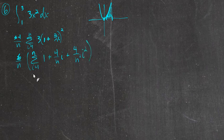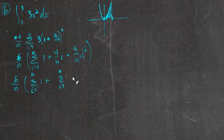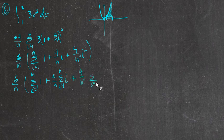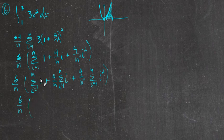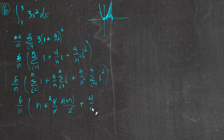Each of these gets broken out into its own sum. We have 6/n times the sum from i=1 to n of 1, plus the sum of 4/n · i (pulling out 4/n as a constant, leaving i), plus 4/n² times the sum of i². The formula for sum of 1's is n; the formula for sum of i is n(n+1)/2, multiplied by 4/n; and the formula for sum of i² is n(n+1)(2n+1)/6, multiplied by 4/n². After canceling n's and factors of 6, we distribute.